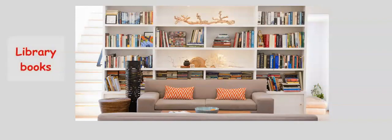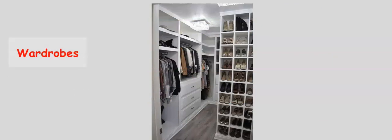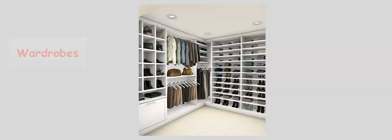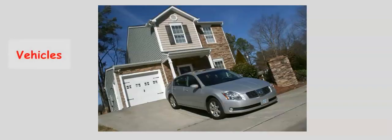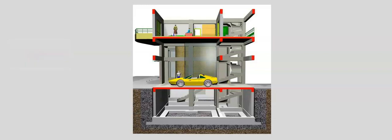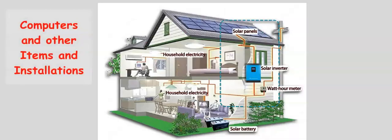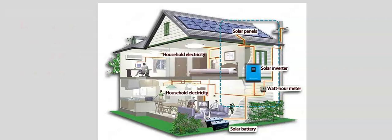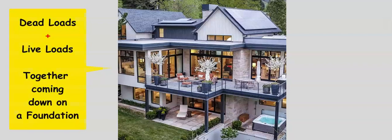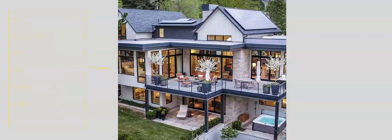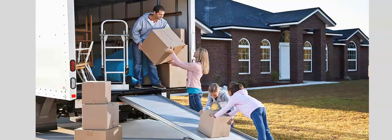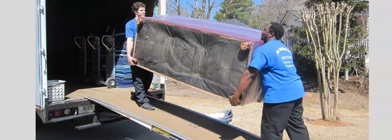Examples of live loads include library books and people occupying the structure. Live loads can be a point load or a uniformly distributed load over an area. Moving house and leaving an apartment, for example, will definitely reduce the live load on that structure.